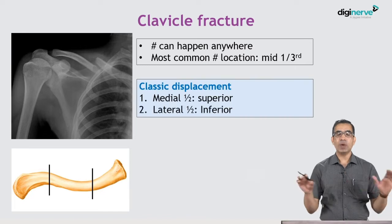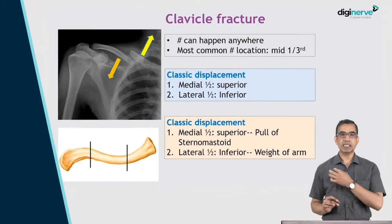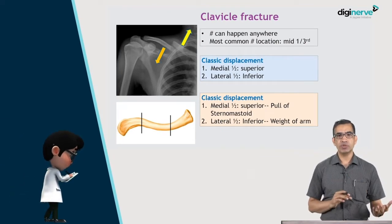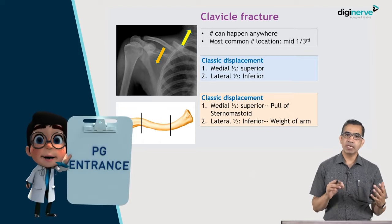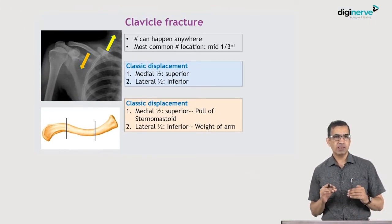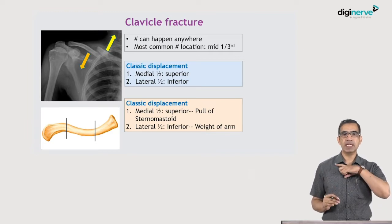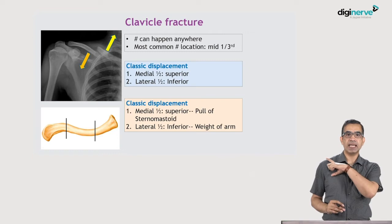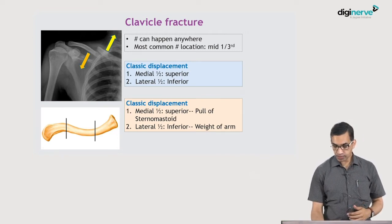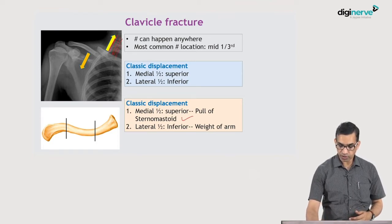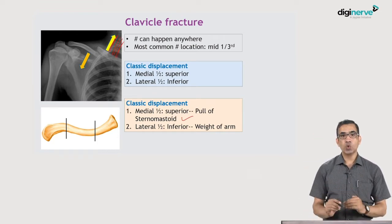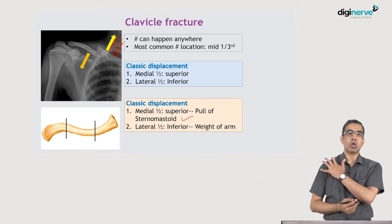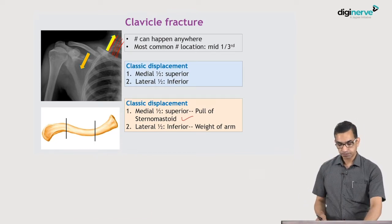When we come to fractures, it can happen anywhere in the clavicle but the most common area is the middle third — that is one of the most common MCQs asked. Once the clavicle fractures, there are typical displacements: the medial end moves upwards and the lateral end goes downwards. The medial end is pulled up by the sternocleidomastoid, while the lateral end goes down because of the weight of the arm and the pull of the deltoid muscles. The most common mechanism of injury is fall on the outstretched hand, and sometimes a fall onto the tip of the shoulder.